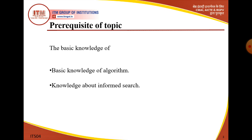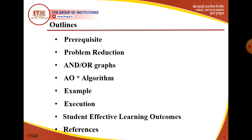Prerequisites में हमें basic knowledge of algorithms होनी चाहिए, then knowledge about informed search algorithms like hill climbing, best-first search, A* algorithm। आगे हम problem reduction क्या होता है यह देखेंगे, फिर AND-OR graph को study करेंगे, then AO* algorithm को देखेंगे और उसका example और execution discuss करेंगे।